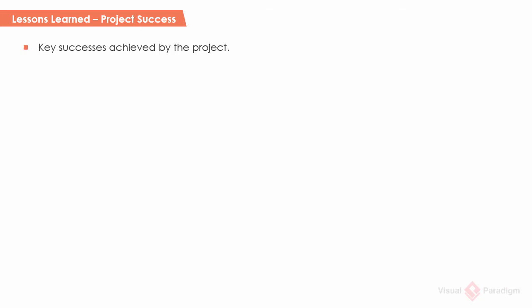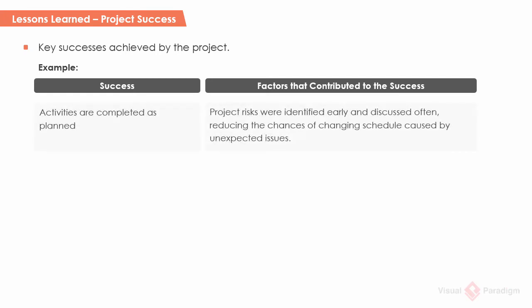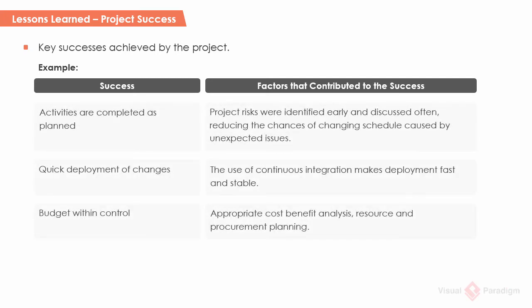Project success refers to the key successes achieved by the project. Instead of just describing the successes, it's more valuable to state the factors that contribute to these successes so that similar projects can repeat them. For example: the project activities completed as planned. Factors contributing to this success include having project risks identified early and discussed often, which reduces the chance of changing the schedule.